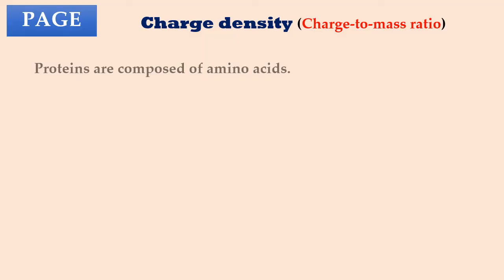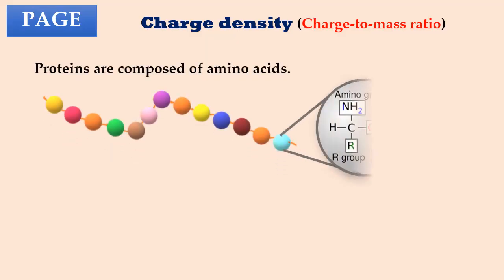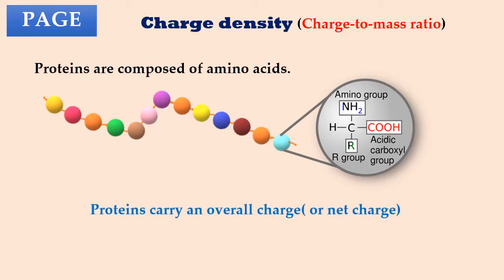Let's first talk about charge density or charge to mass ratio of the protein molecule. We know that proteins are composed of amino acids. Each of these amino acids carries charge, either positive or negative. Also, some of them may have no charge. Thus, because of these individual charges on the amino acid residues, the protein molecule will carry an overall or net charge.